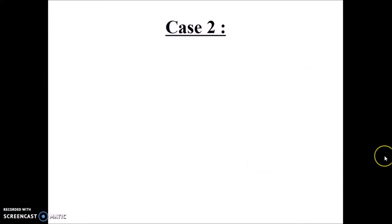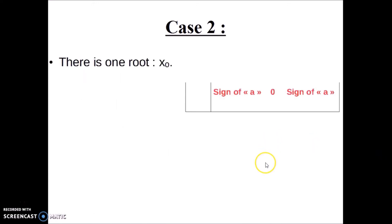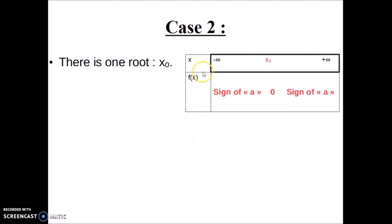Let's see Case 2. In this case there is only one root — let's call it x0. In the sign table, from negative infinity to x0 we have the sign of a, at x0 we have 0, and from x0 to infinity we have the sign of a again.